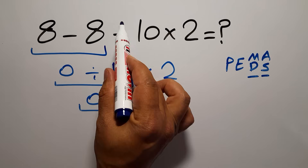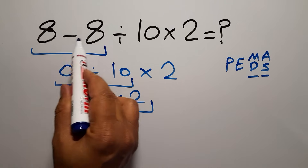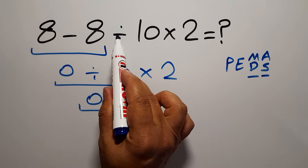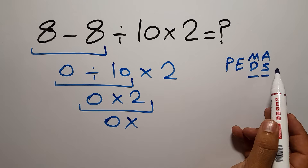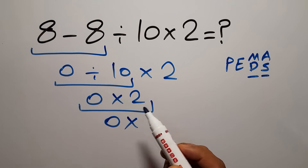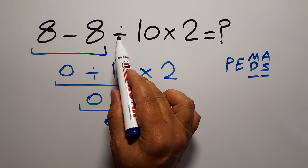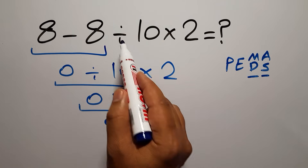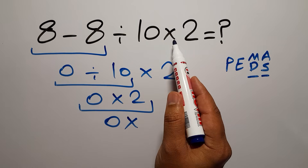So here, first we have to do this division, then this multiplication, and finally this subtraction, because multiplication and division have higher priority than subtraction in PEMDAS. Multiplication and division come before subtraction, and since they have equal priority, we go from left to right: first division, then multiplication, then subtraction.